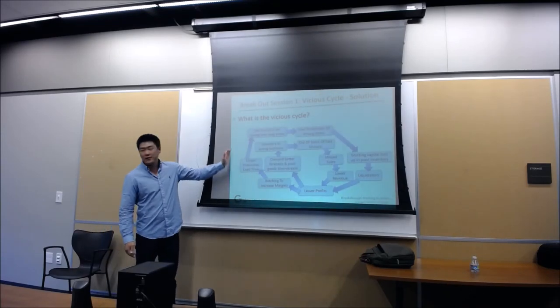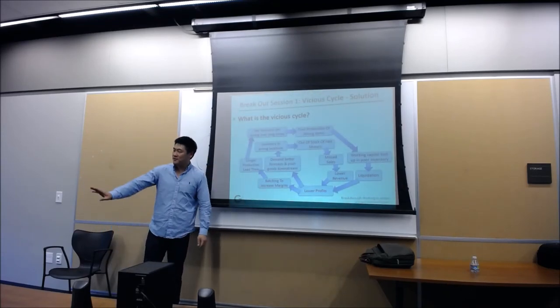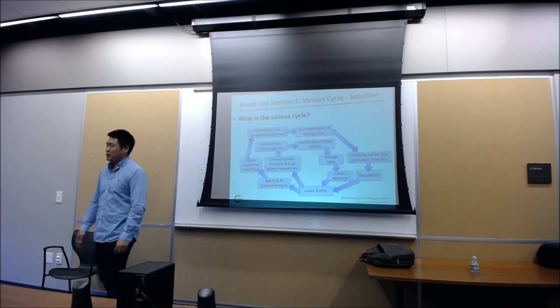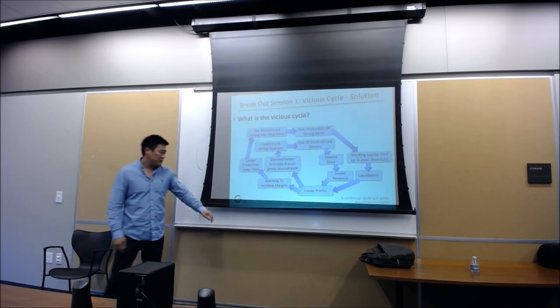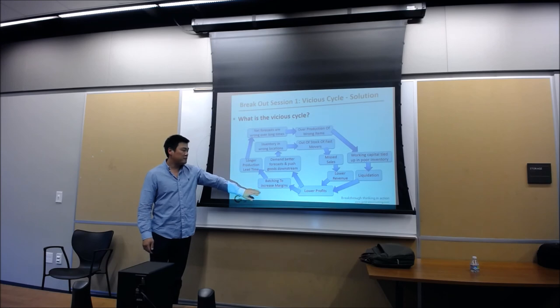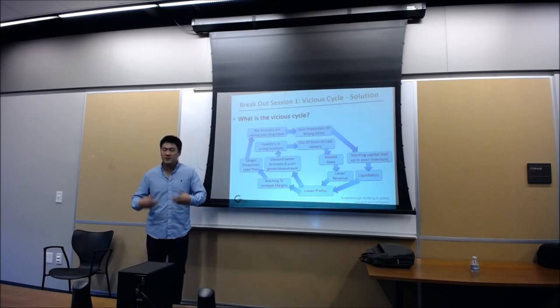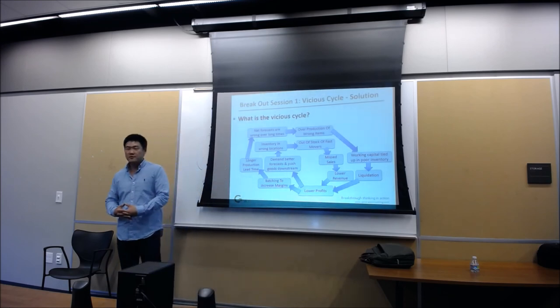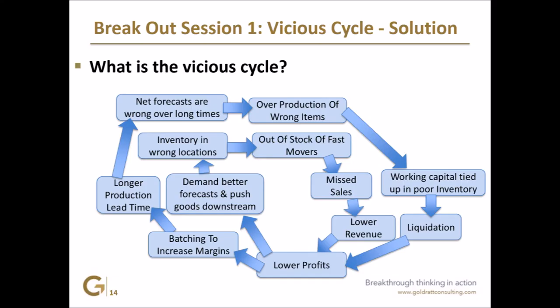So I think this outer cycle is actually something you guys came up with on your own. I can start here. Lower profits — people start caring about their cost. Everything is cost-driven. Instead of trying to sell more, a lot of times we try to make sure that we're spending as low as we can. So we batch longer production lead times, which makes production a lot more efficient a lot of times.